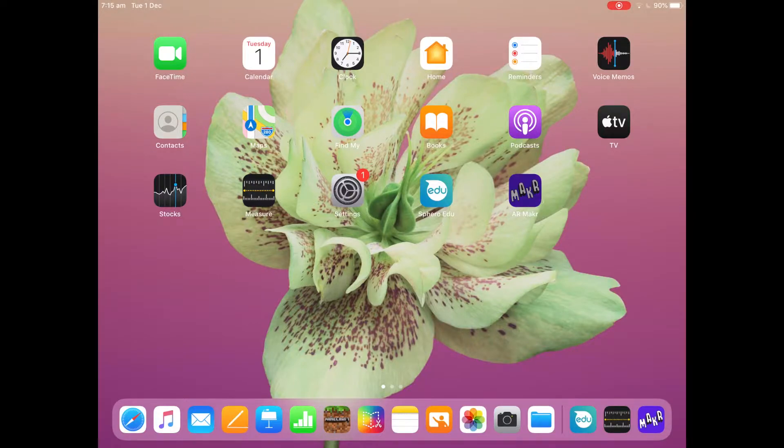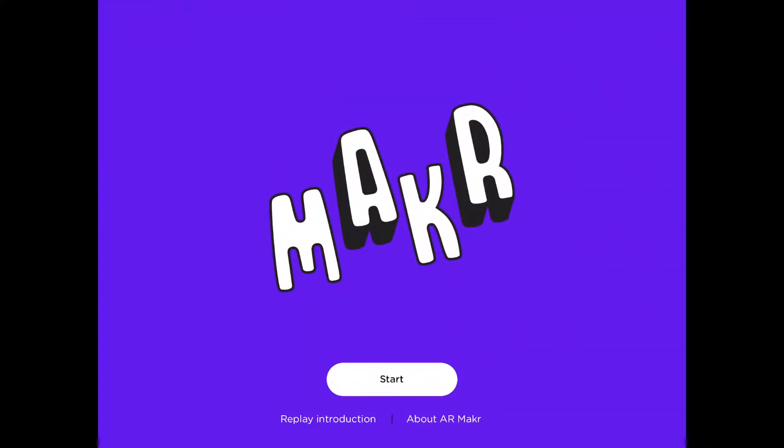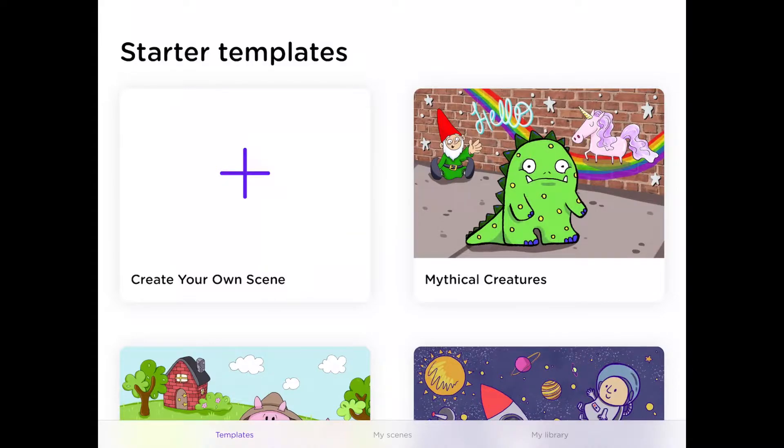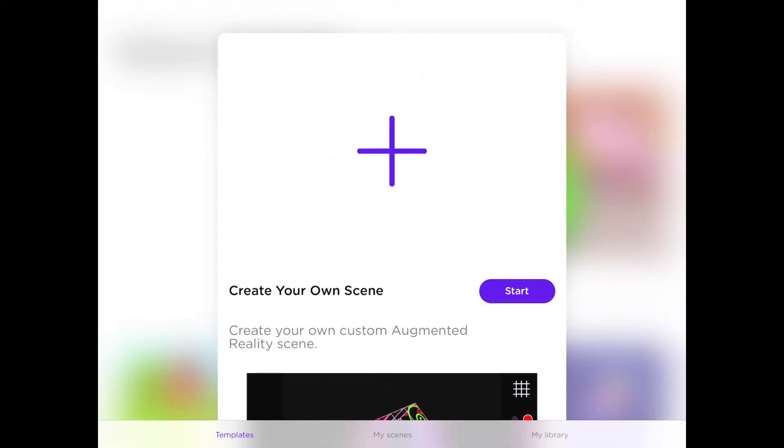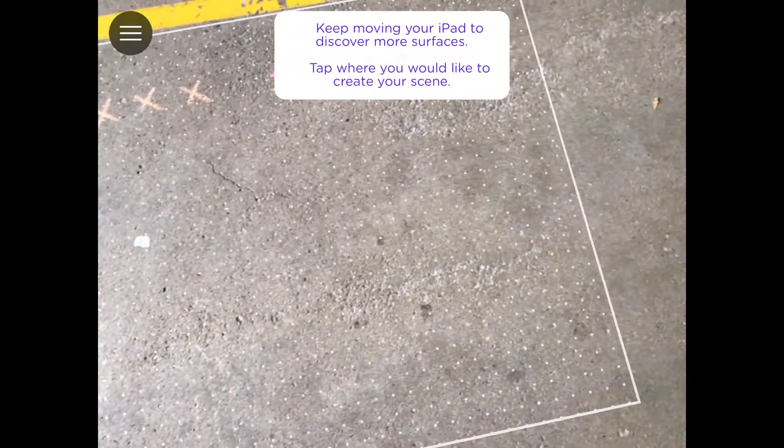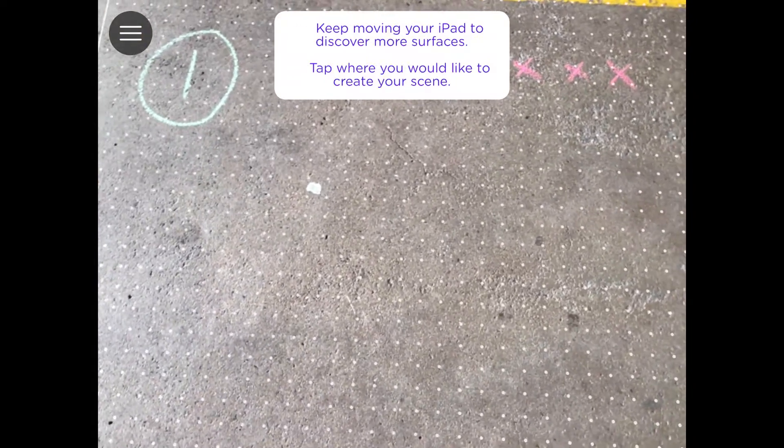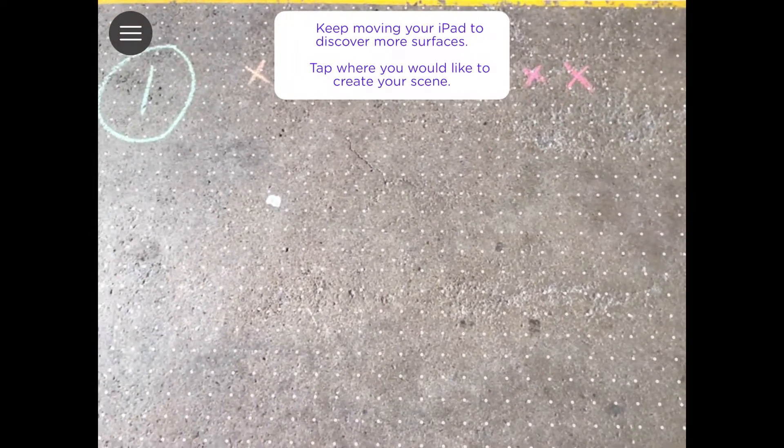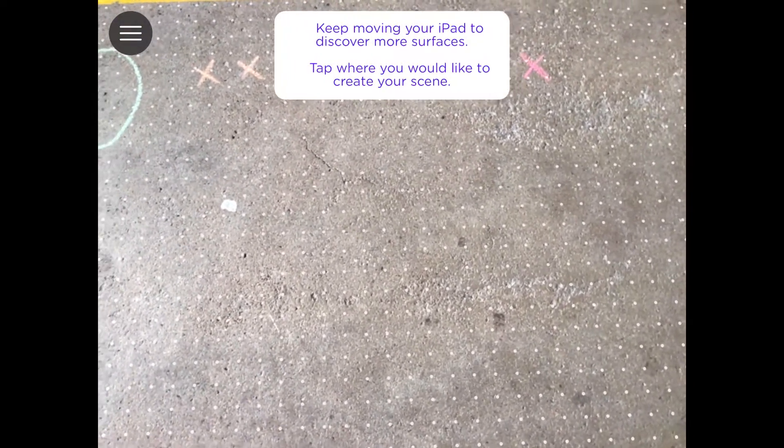So we're going to select AR Maker, then push start and select the plus to create your own scene. Now we'll select start again and begin by just scanning the area to make sure we've got a usable flat surface that the app has picked up.